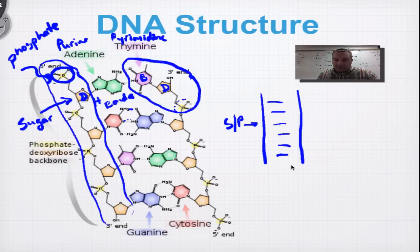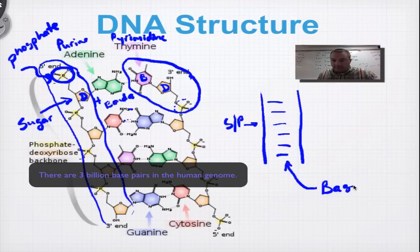The steps of the ladder. Those are what we call base pairs. And these base pairs follow Chargaff's rules. A to T. C to G.